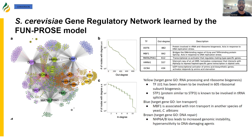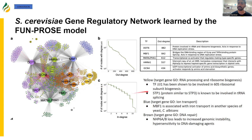We also ran modularity detection on our network, and for each module we took the target genes, ran GO-term analysis, and found that a lot of the time the GO-terms for a particular module matched the transcription factors that regulate that module. For example, in the light yellow module, the target genes had GO-terms associated with RNA processing and ribosome biogenesis. We saw that the transcription factor JJJ1 has been shown to be involved with 60S ribosomal subunit biogenesis, and STP1 — a protein similar to STP3 — has been known to be involved in tRNA splicing. Similar patterns were seen for the blue module and the brown module.